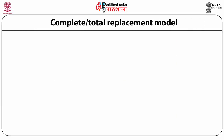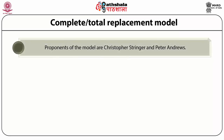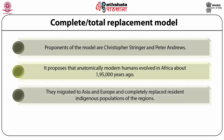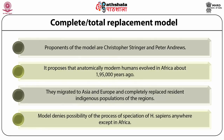The complete or total replacement model was proposed by British anthropologists Christopher Stringer and Peter Andrews. This hypothesis says that Homo sapiens evolved in Africa around 200,000 years ago. It proposes that anatomically modern human populations emerged only in Africa, and then fully modern humans migrated to Asia and Europe. The transition from pre-modern to modern humans exclusively took place in Africa as a result of the speciation process. Thus, migrated Homo sapiens could not interbreed with non-African human populations in other continents.